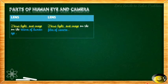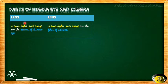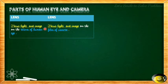Now let's look at the lens in both the human eye and the camera. The lens focuses light and the image onto the retina of the human eye. For the camera, the lens also focuses light and the image, but onto the film or card depending on the type — digital cameras use a card, while film cameras focus onto the film.